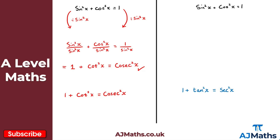Now taking sin²x plus cos²x equals 1 again, how do we obtain 1 plus tan²x equals sec²x? Similar to the previous proof where we divided through by sin²x, for this one we're going to divide through by cos²x. Whatever you do to one side, make sure you do it to the other.